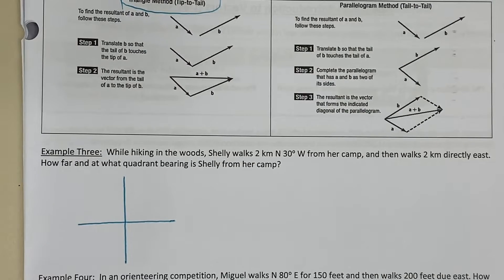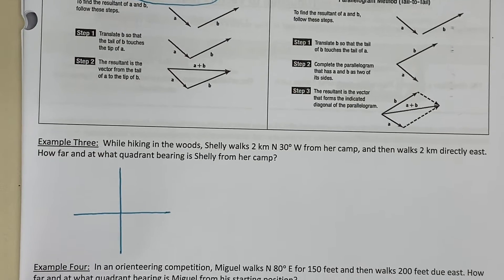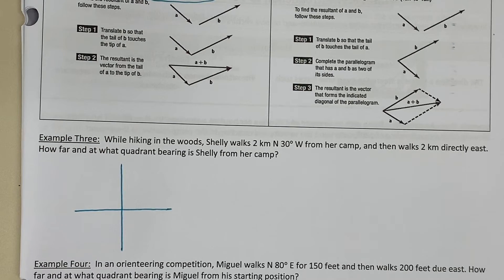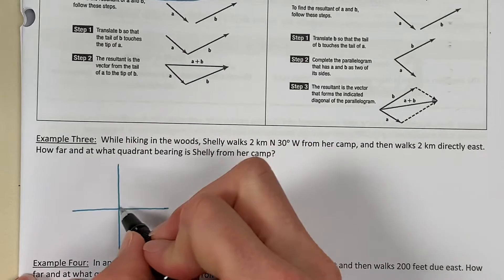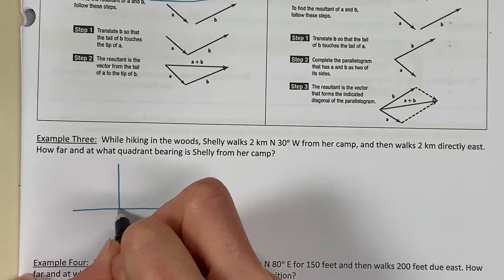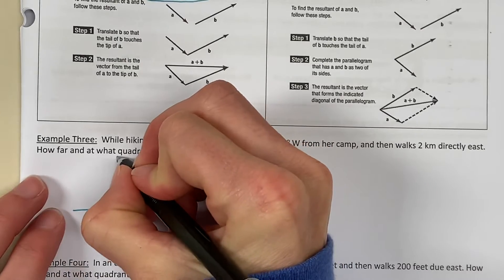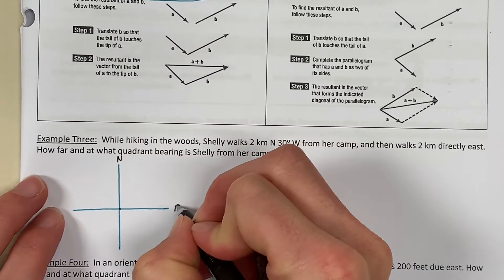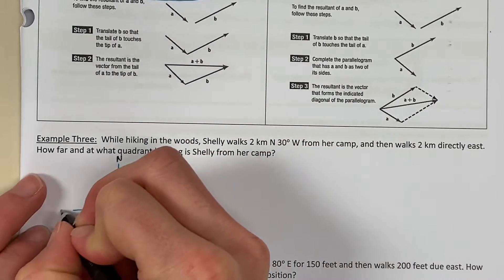Now, I'm not actually going to use a ruler and a protractor. I'm just going to make sketches and use our trigonometry to answer this question. We always are going to begin at the origin. So, from camp, she walks two kilometers north 30 degrees west. So, remember this is north, east, south, and west. Never eat soggy waffles.